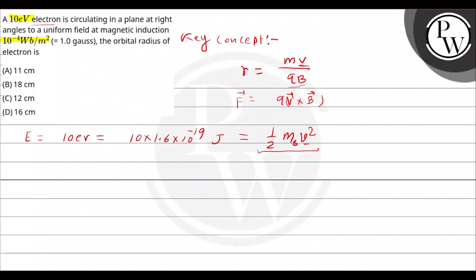So v is equal to 2 into 10 into 1.6 into 10 to the power minus 19, divided by the mass of an electron 9.1 into 10 to the power minus 31 kg, in the square root of this. Let us calculate this value.